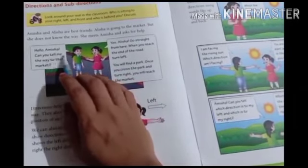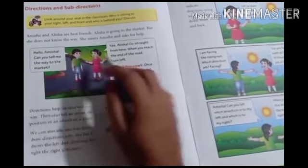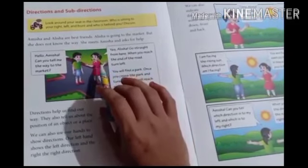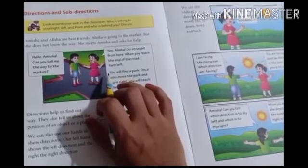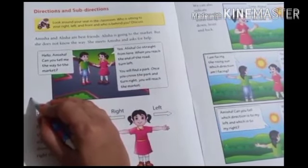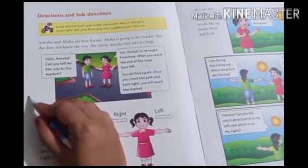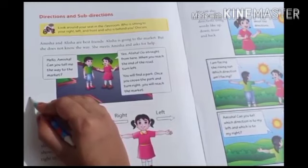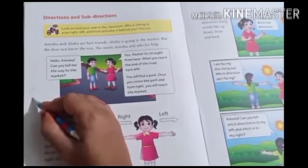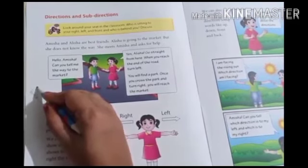Alicia asks: Hello Amisha, can you tell me the way to the market? Amisha replies: Yes Alicia, go straight from here. When you reach the end of the road, turn left. Then you will find a park. Once you cross the park, turn right. You will reach the market.